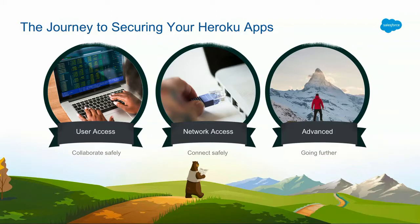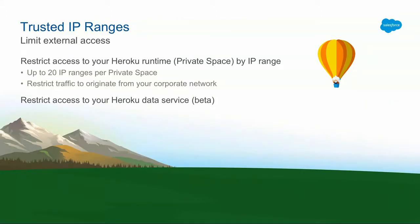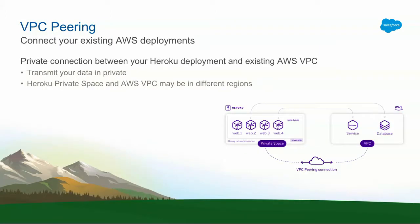So that was user access. Moving on to network access — this is all about connecting things into your Heroku apps or into your private space and back out as well. We allow you to trust IP ranges to access your private spaces. One reason you might use this is that you have a certain range of IPs on your corporate network and you only want machines on that network to be able to access your applications — making this kind of an intranet app. You can also do the same thing with our data stores, and that is currently in beta. If you have other Amazon VPCs — and Heroku private spaces are implemented as AWS VPCs — you can peer those with your private space through VPC peering. So you may have other data stores or an existing deployment in another Amazon VPC and you'd like to join those networks. You can even do that across regions.